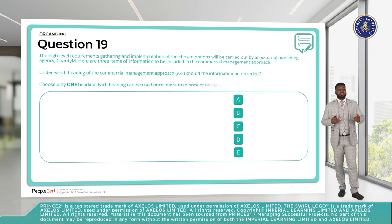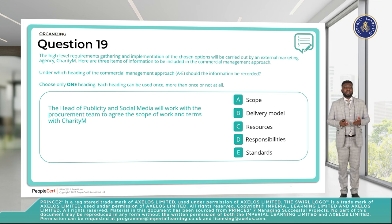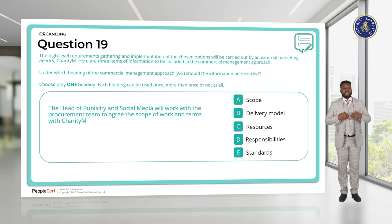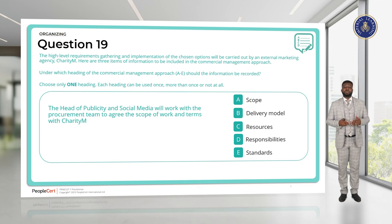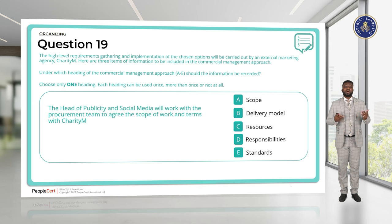Now let's look at the Organizing practice. The high-level requirements gathering and implementation of the chosen option will be carried out by an external marketing agency. Here are three items of information to be included in the commercial management approach. Under which heading should the information be recorded? Choose only one heading; each can be used once, more than once, or not at all. The headings are: A — Scope, B — Delivery Model, C — Resources, D — Responsibility, and E — Standards.